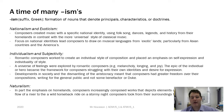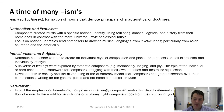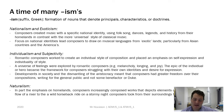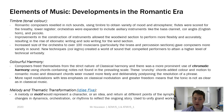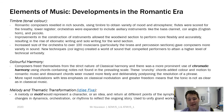There is also the idea of Naturalism. With the emphasis on homelands, composers increasingly composed works that depicted elements of nature — from the flow of a river to a wild horseback ride on a stormy night — taking their surroundings as inspiration. These are the big points we need to touch on for this course. Now that we know what was happening at and just before the Romantic period — the destruction of the aristocracy and big shifts in society — we'll look at the elements of music and how they changed in the Romantic era.